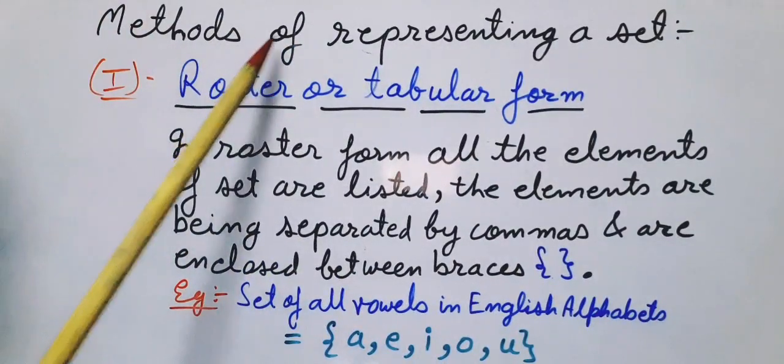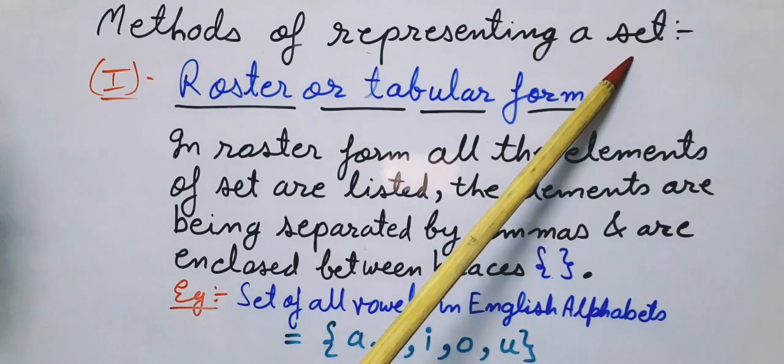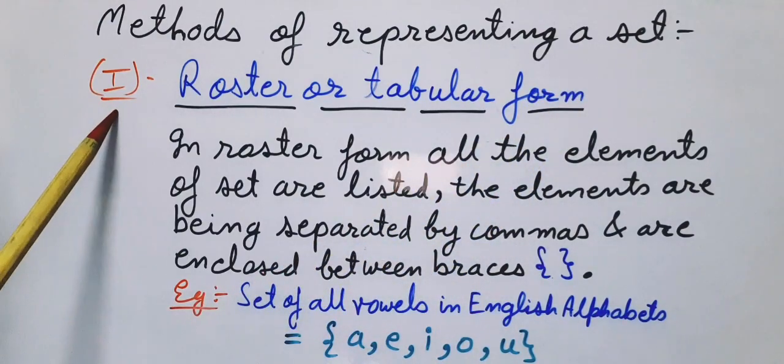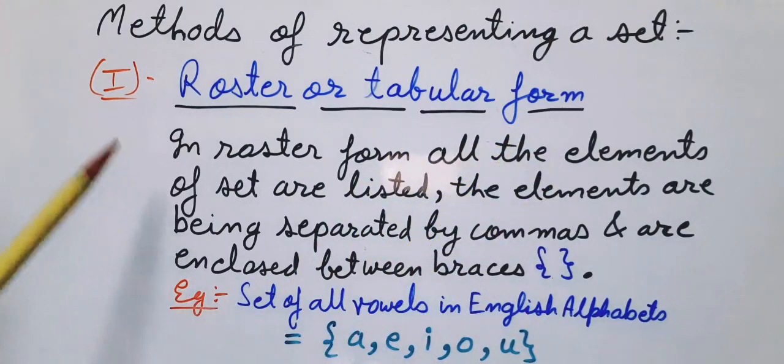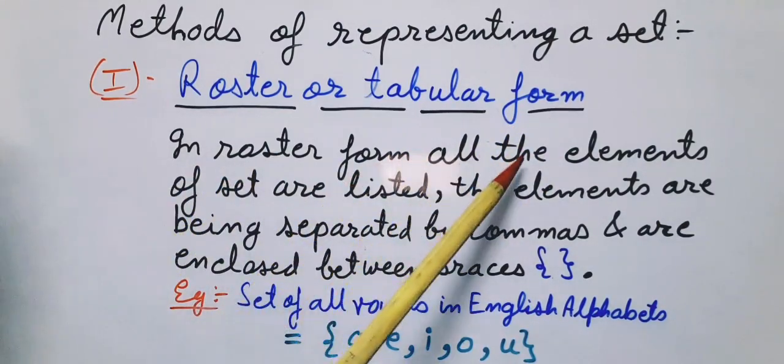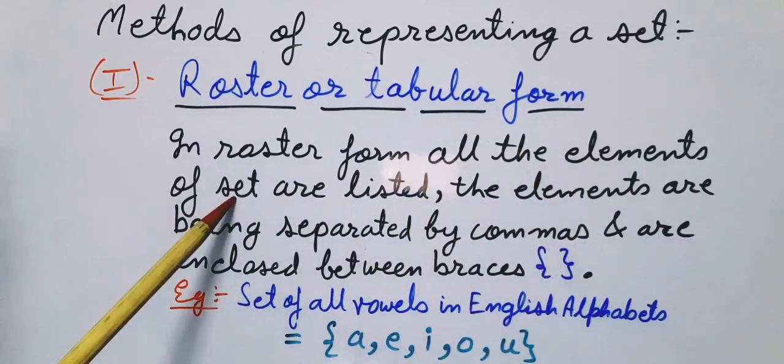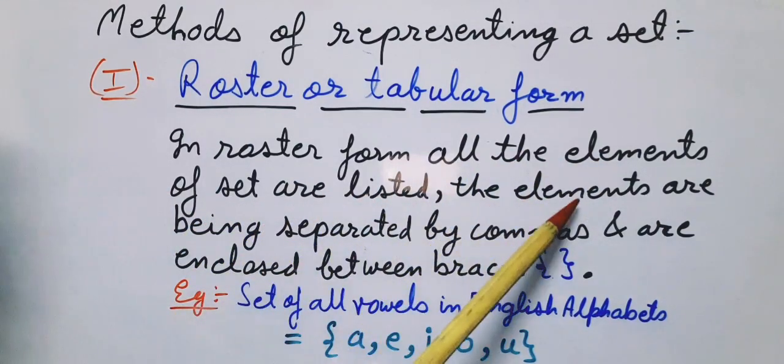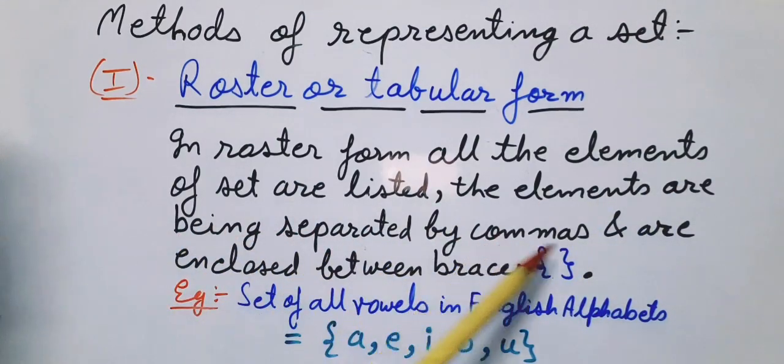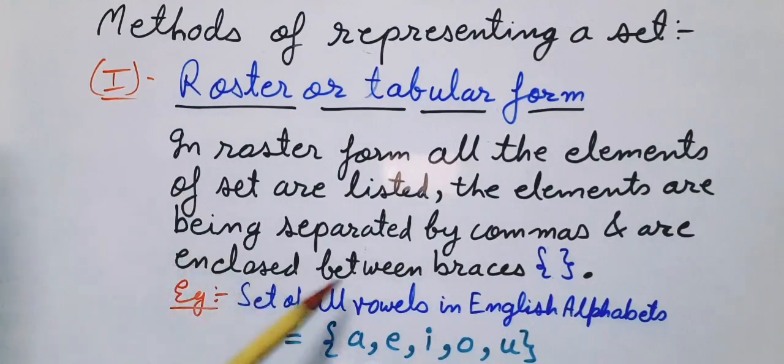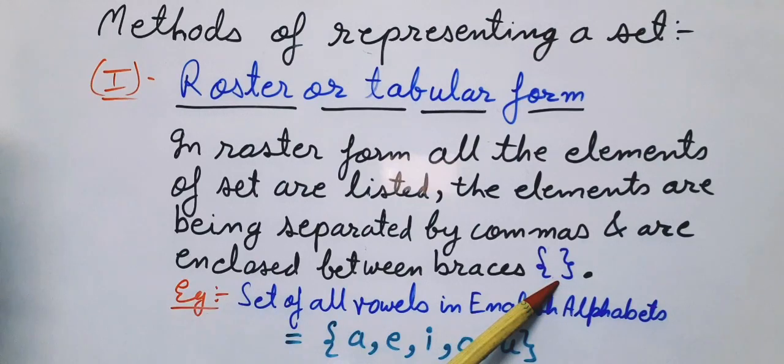Now we will discuss methods of representing a set. The first method is roster or tabular form. In roster form, all the elements of a set are listed. The elements are separated by commas and are enclosed between curly braces.